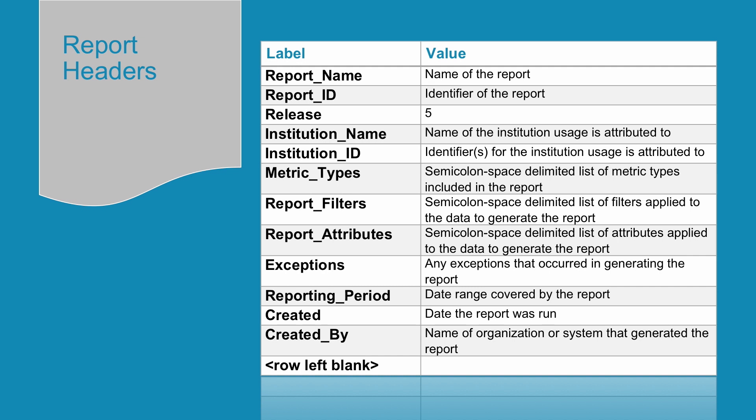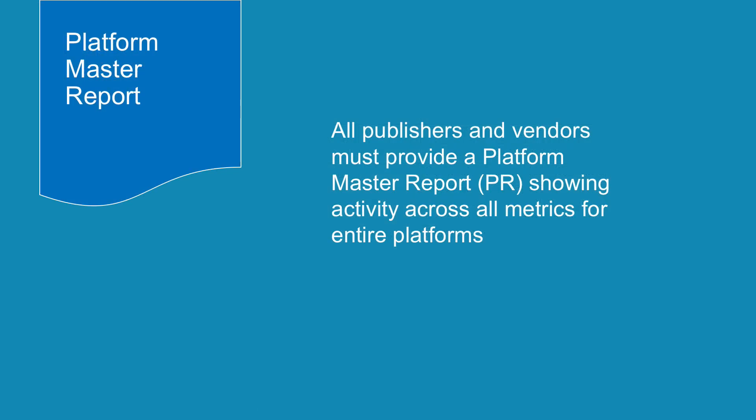For the purposes of this foundation class, we're showing the header and body information separately, but in an actual Counter Release 5 report these would be in the same sheet, with the header in cells A1 to B13 and the body of the report below. All publishers and vendors must provide a Platform Master Report, known as a PR, showing activity across all metrics for entire platforms.